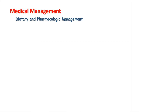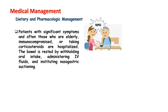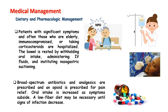Patients with significant symptoms, and often those who are elderly, immunocompromised, or taking corticosteroids, are hospitalized. The bowel is rested by withholding oral intake, administering IV fluids, and instituting nasogastric suctioning. Broad-spectrum antibiotics and analgesics are prescribed and an opioid is prescribed for pain relief. Oral intake is increased as symptoms subside. A low-fiber diet may be necessary until signs of infection decrease.